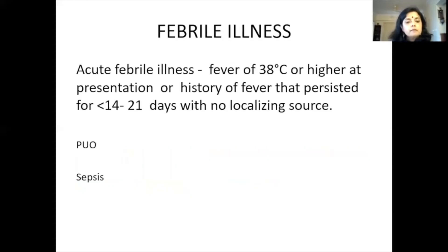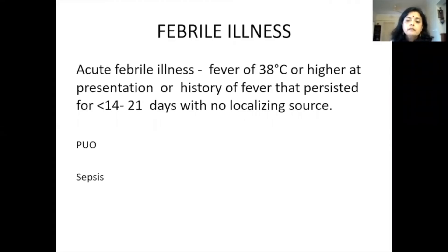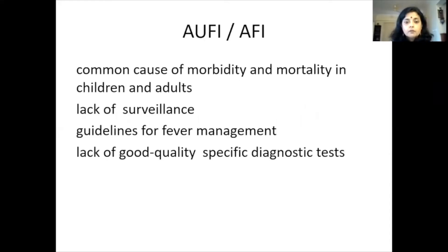When we say febrile illnesses, this session will focus on acute febrile illnesses. Not all febrile illnesses are easy to include in cytomorphometric evaluation, and we are not going to talk of sepsis in this session. Febrile illnesses here are defined as a fever of 38 degrees centigrade or higher at presentation, or a history of fever persisting for 14 to 21 days with no localizing source. These are called acute undifferentiated febrile illnesses or acute febrile illnesses — AUFI or AFI — a terminology which is worldwide accepted.